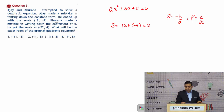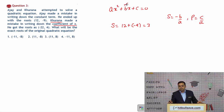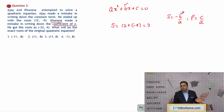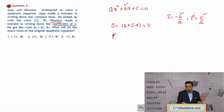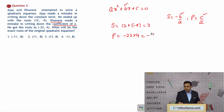Since Khurana made the mistake in the coefficient of x, which is used to find the sum of roots, his sum is wrong but the product of roots is correct. So the product of roots = −22 × 4 = −88.